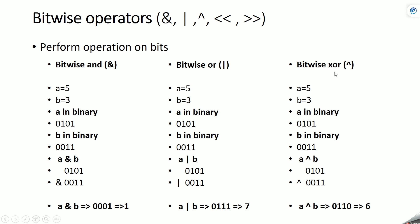Similarly, we have bitwise XOR. In XOR, if two bits are different the result is 1, otherwise it is 0. In our case the differing bits produce 1s and the matching bits produce 0s, so the result is 6.